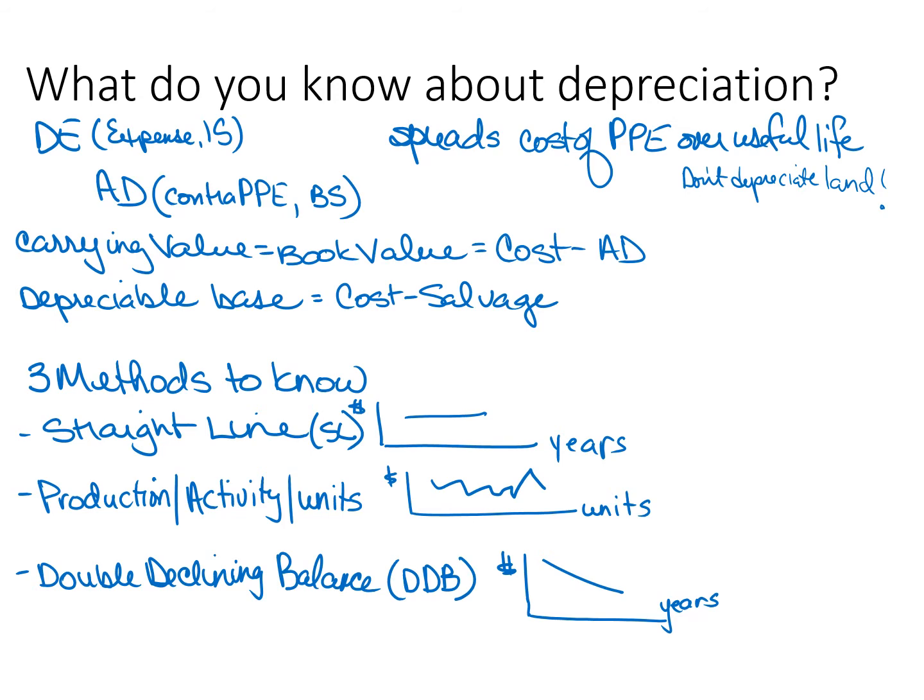The depreciable base is the cost of the asset minus its salvage or residual value — meaning how much you think you'll be able to dispose of that property, plant and equipment at the end of its useful life, i.e., its disposal value at the end. We only depreciate down to the depreciable base.